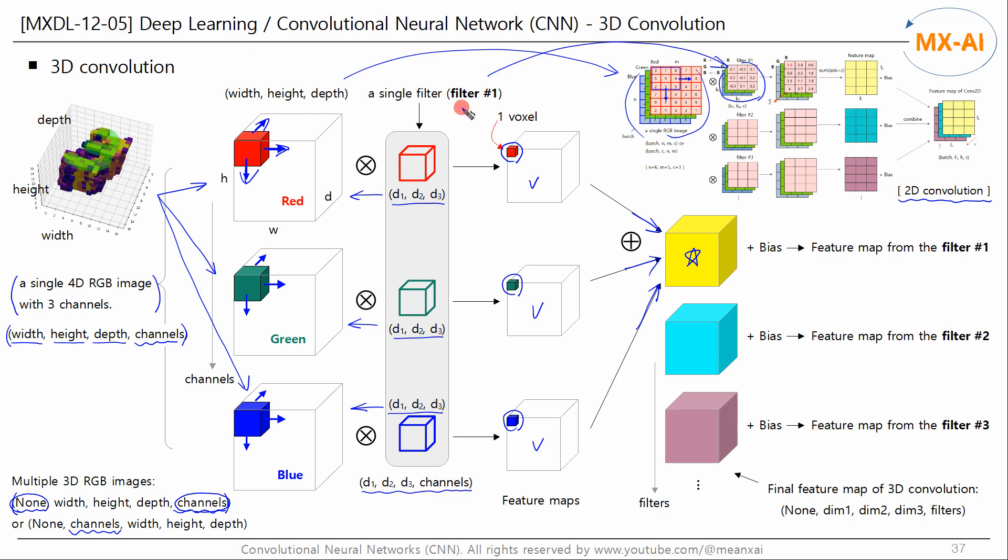Then we can get a single feature map like this. This is the feature map obtained using the first filter. This corresponds to the first yellow feature map in the 2D convolution example. You can add a bias here.